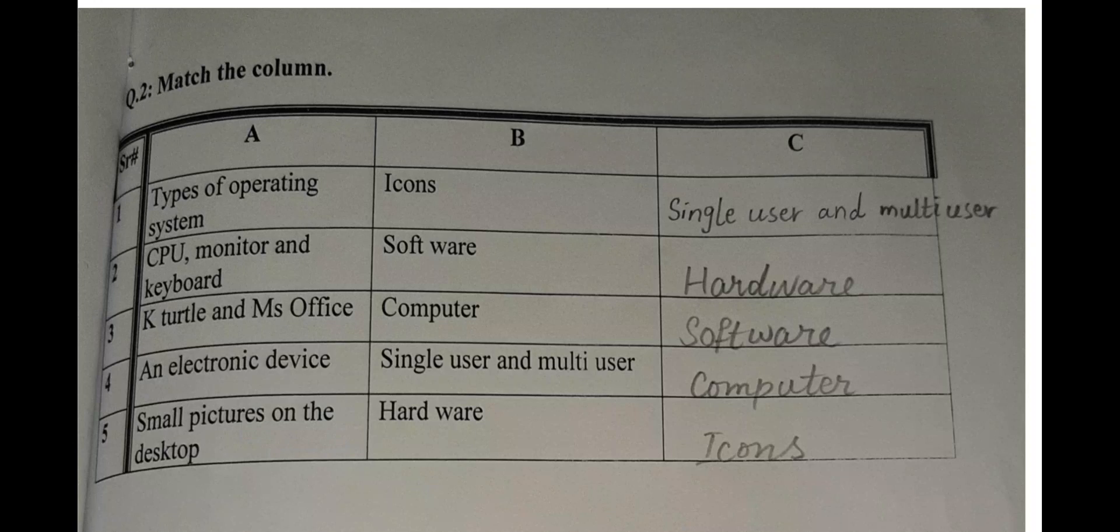Now we turn to question number two: Match the Column. There is Column A, Column B, and Column C. As you know, Column A has questions and Column B has answers, but in Column B the answers are shuffled, not set according to Column A. So we have to write the correct answers from Column B into Column C.